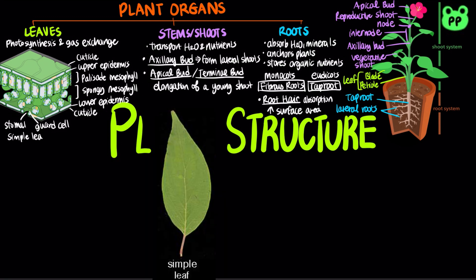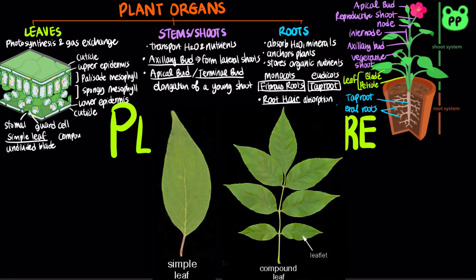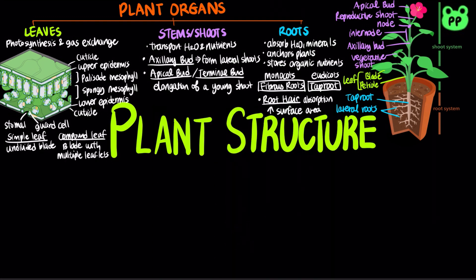A simple leaf consists of a single undivided blade, whereas a compound leaf consists of a blade with multiple leaflets. Each plant organ is composed of three types of tissues: dermal, vascular, and ground tissues.